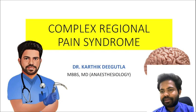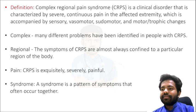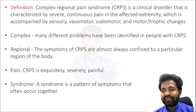So what is Complex Regional Pain Syndrome? CRPS, as we talk about the definition, it is a clinical disorder that is characterized by severe continuous pain in the affected extremity, which is accompanied by sensory, vasomotor, pseudomotor, and motor or trophic changes.